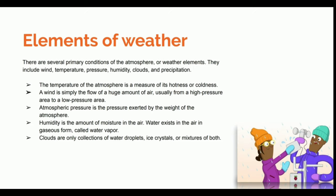The temperature of the atmosphere is a measure of its hotness or coldness — simply put, how hot or cold the atmosphere is. Wind is simply the flow of a huge amount of air, usually from a high pressure area to a low pressure area.